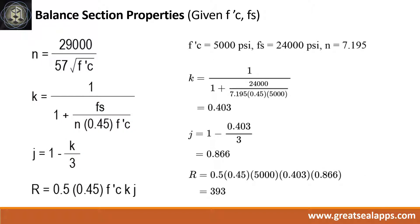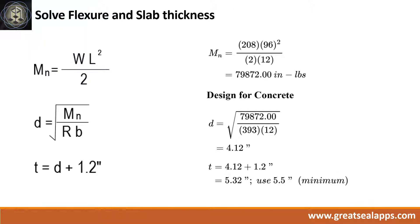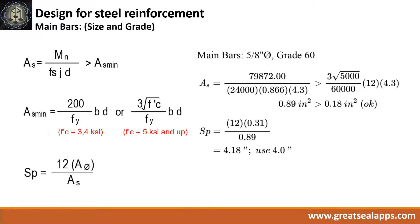Given FC' equals 5,000 PSI and FS equals 24,000 PSI, the balanced section properties are as follows: N equals 7.195, K equals 0.403, J equals 0.866, R equals 393. Given W equals 208 pounds per foot and L equals 8 feet, the moment is 79,872 inch-pounds. The effective depth is 4.12 inches and total depth is 5.5 inches. Given M equals 79,872, FS equals 24,000, J equals 0.866, and D equals 4.3.